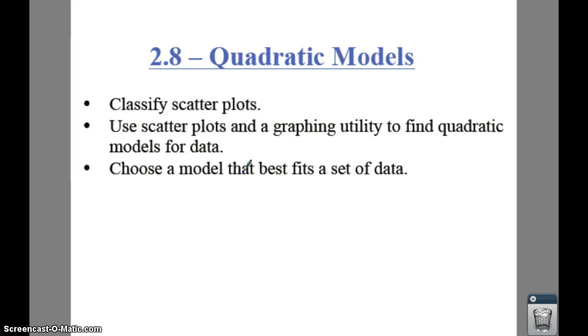When we classify these, they're either going to have a positive, negative, or no correlation. We're also going to use some scatter plots in a graphing utility to find quadratic models. And then the third thing we're going to do is choose a model that best fits a set of data.